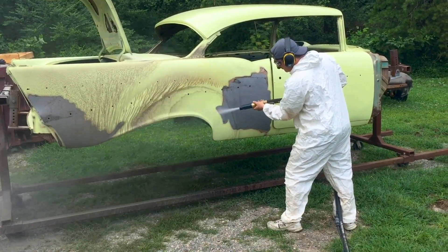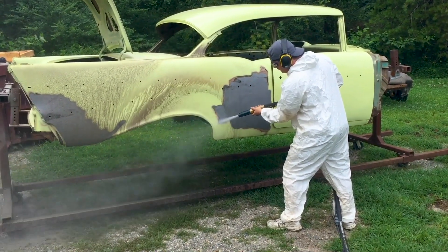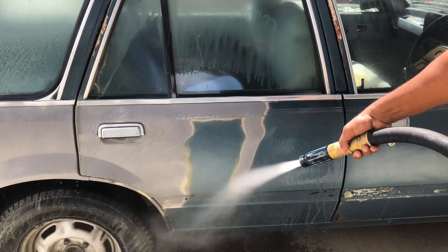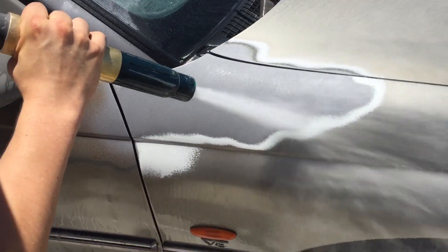So in stripping a car, for example, you'll want an angular abrasive like crushed glass or garnet to cut through paint and primer faster and create an anchor profile for new paint.